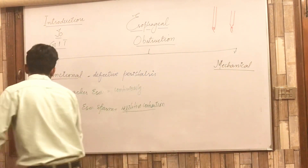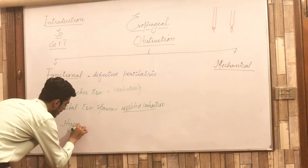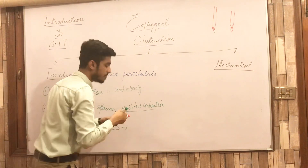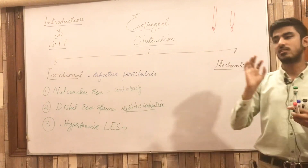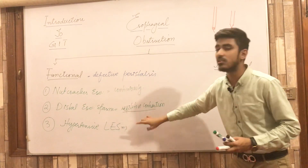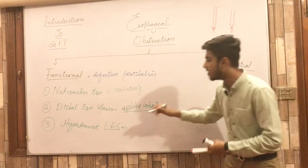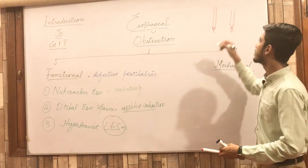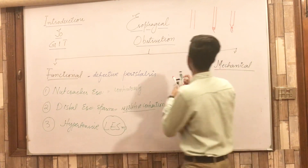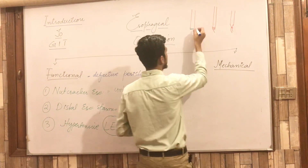The third functional form is the hypertensive lower esophageal sphincter. In this condition, remember that peristaltic movement is normal — unlike in the first two conditions where peristalsis is defective. The main defect in hypertensive lower esophageal sphincter is located specifically in the lower esophageal sphincter.